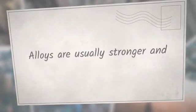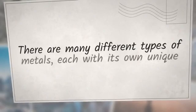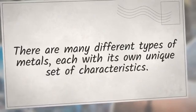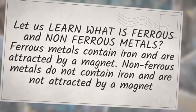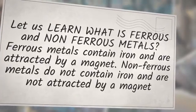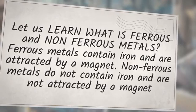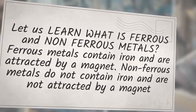Alloys are usually stronger and harder than the metals they are made from. There are many different types of metals, each with its own unique set of characteristics. Let us learn what ferrous and non-ferrous metals are. Ferrous metals contain iron and are attracted by a magnet. Non-ferrous metals do not contain iron and are not attracted by a magnet.